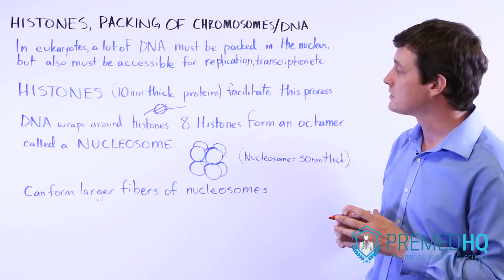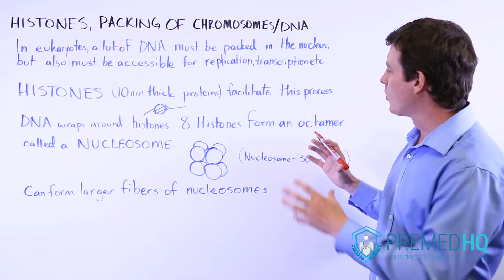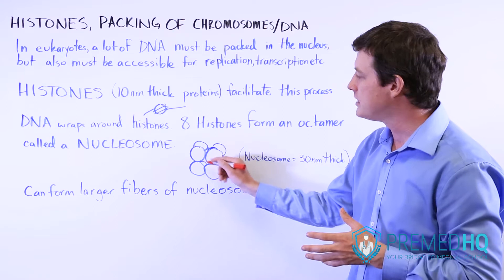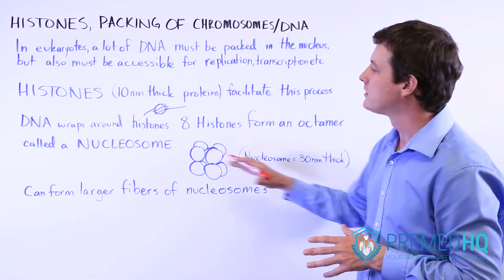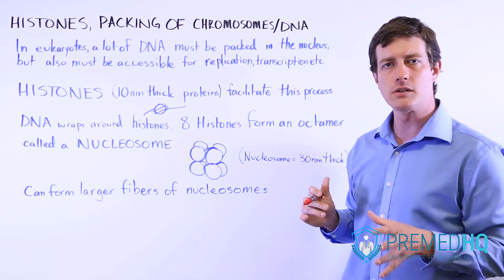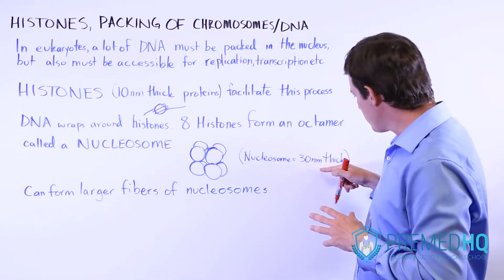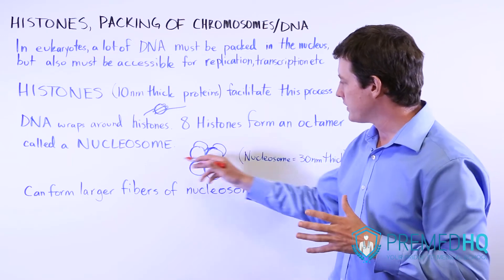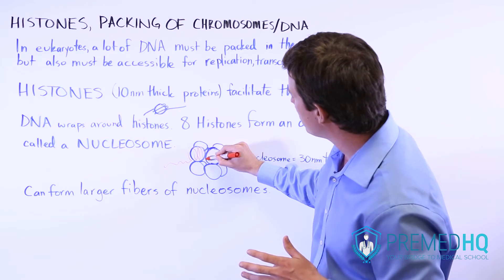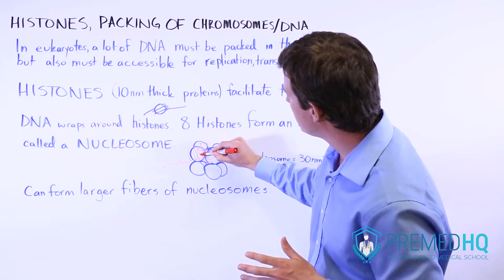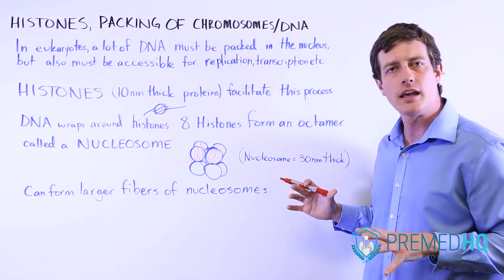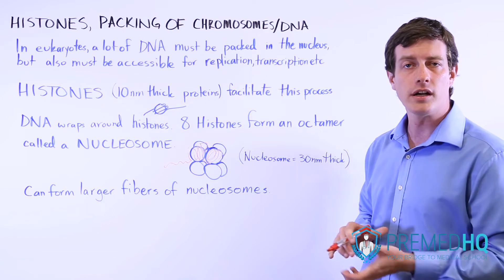Histones form octamers — eight histone units together, all with DNA wrapping around them. This is called a nucleosome. A nucleosome is an octamer of histones and has approximately a 30 nanometer diameter. The DNA coils repeatedly around each of the individual histones in this arrangement, allowing a large amount of DNA to fit within a fairly small volume in the eukaryotic cell.